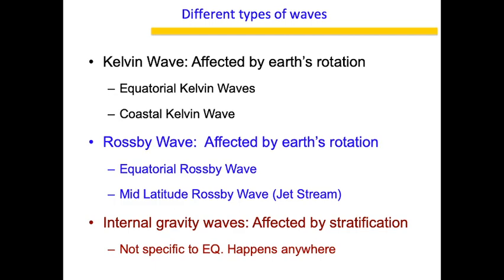So what are the different types of waves? I'm only covering some major waves here — there are many different types, there is a whole book on the types of waves. I'm covering only those most important for weather patterns. The first is the Kelvin wave, which is affected by Earth's rotation — basically the Coriolis force. You have different types: the equatorial Kelvin wave, the coastal Kelvin wave. The equatorial Kelvin wave itself has many branches, one famous branch being the convectively coupled Kelvin wave, which helps in the formation of convective clouds.